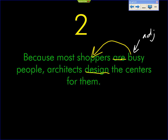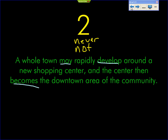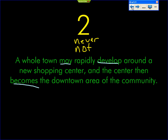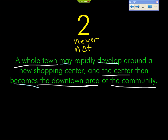Let's see. Connor, pick out a noun phrase. You don't have to get up. Most shoppers — that is correct. I've got one more in there. Michael. The centers — the centers is correct. Sonia, find a noun phrase. A whole town is correct. Michael, your next one: the center — very good. Ron: the downtown area, because the core noun is 'area' and we're describing through 'downtown.' Gretchen: the community. And Kristen: a new shopping center — very good.